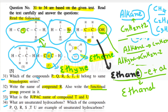Question 34: What are unsaturated hydrocarbons, and which of the compounds P, Q, R, S, T, U are examples? Unsaturated hydrocarbons are compounds with a double or triple bond in their structural formula — they have space to add more atoms. Compounds P, T, and U are unsaturated compounds. The others have only single bonds, so they are saturated compounds.